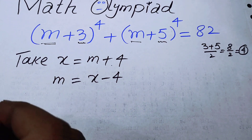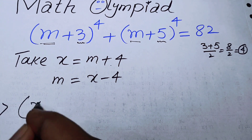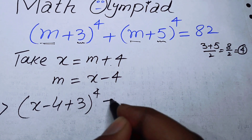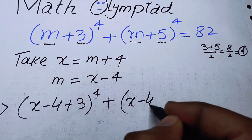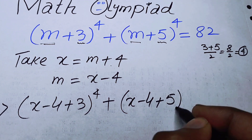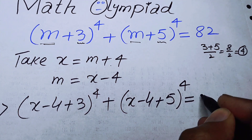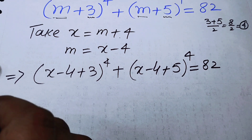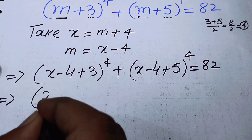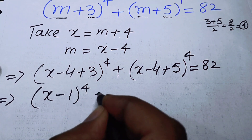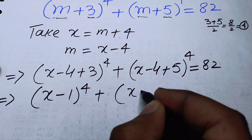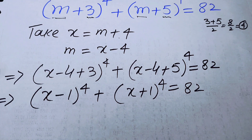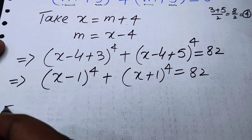After substituting m = X - 4, we obtain (X - 4 + 3)^4 + (X - 4 + 5)^4 = 82. Simplifying the terms, we get (X - 1)^4 + (X + 1)^4 = 82.